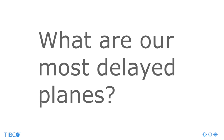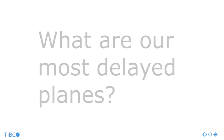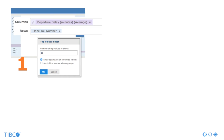So now we're going to ask a question of this data: what are our 15 most delayed planes compared to the average? Let's go through the process of answering that question in Jaspersoft's Ad Hoc. We start by creating an ad hoc view. We drag in a dimension — plane tail number — and our measure, minutes delayed. We only want to show the top 15 planes and the average of all the others, so we use our top values filter.